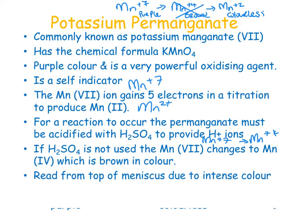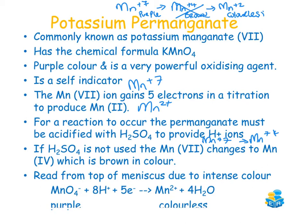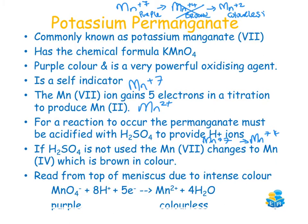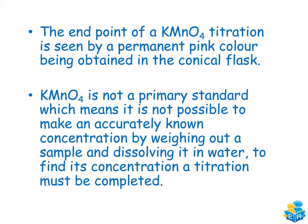It's important to read from the top of the meniscus when potassium permanganate is in a burette, due to its intense color. The MnO₄⁻ ion, with manganese in the +7 oxidation state, gets reduced to Mn²⁺, going from purple to colorless. The endpoint of a KMnO₄ titration is reached when a permanent pale pink color is obtained in the conical flask.